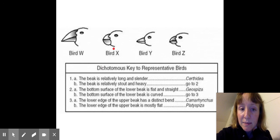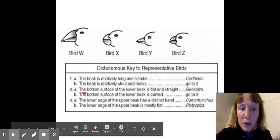Let's do bird X. Let's do a series of elimination. The beak is relatively stout and heavy. Yes. Go to number two. The bottom surface of the lower beak is flat and straight. No, it's curved. So the bottom surface of the lower beak is curved. Go to three.